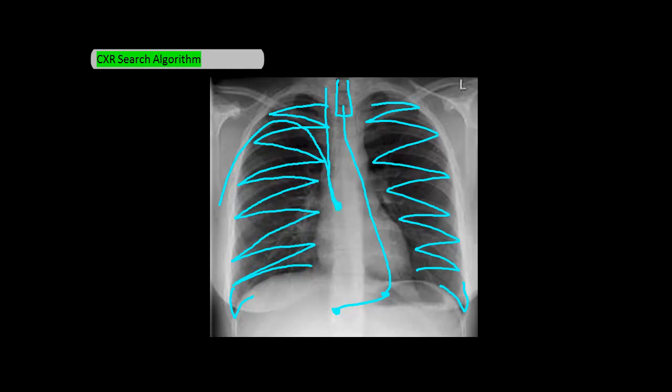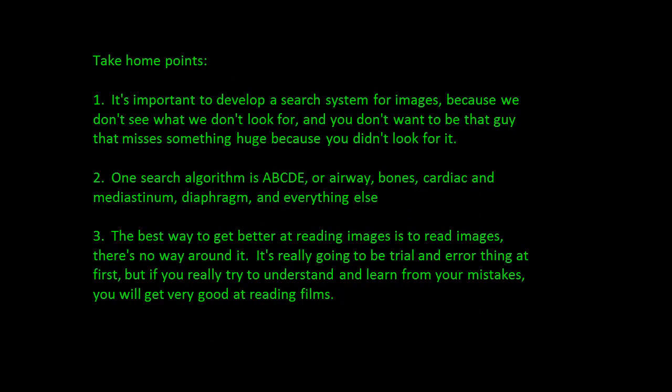So there you have it. The take-home points: number one, it's important to develop a search system for images because we don't see what we don't look for. One search algorithm is ABCDE — airway, bones, cardiac and mediastinum, diaphragm, and everything else. And finally, the best way to get better at reading images is to read images. There's no way around it — it can be painful at first, but you need to do it. It's really about trial and error, but you'll learn and get very good at it.